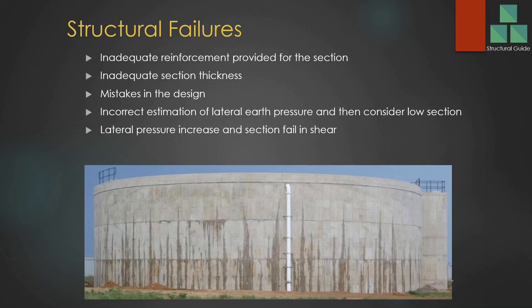The final failure mode is structural failure. Inadequate reinforcement design or inadequate section capacity can lead to structural failures. When high loads are applied and the section is not adequate, there will be a failure. Incorrect estimation of the lateral load, as discussed earlier, could also contribute. A section's structural capacity depends on its thickness and reinforcement. These failures may be in bending or shear, so we must provide adequate reinforcement, adequate section thickness, and adequate shear links where shear is critical.